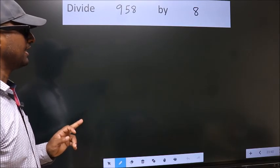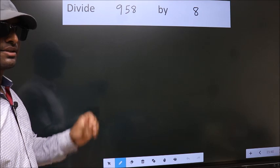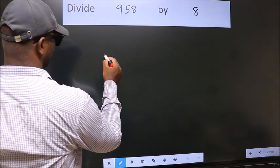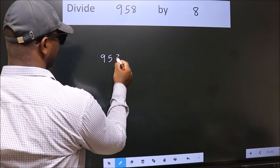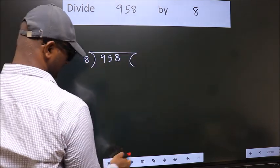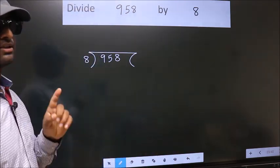Divide 958 by 8. To do this division we should frame it in this way. 958 here, 8 here. This is your step 1.